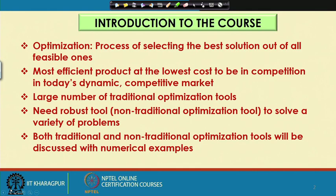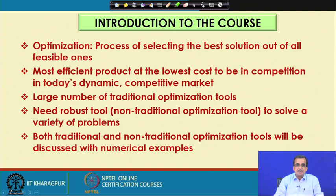Introduction to the course. To start with, let me give you the definition of the term optimization. In other words, let me try to answer what do you mean by optimization. Optimization is the process of selecting the best solution out of all feasible ones. Supposing that we have got a large number of feasible solutions, we will have to select the best one.